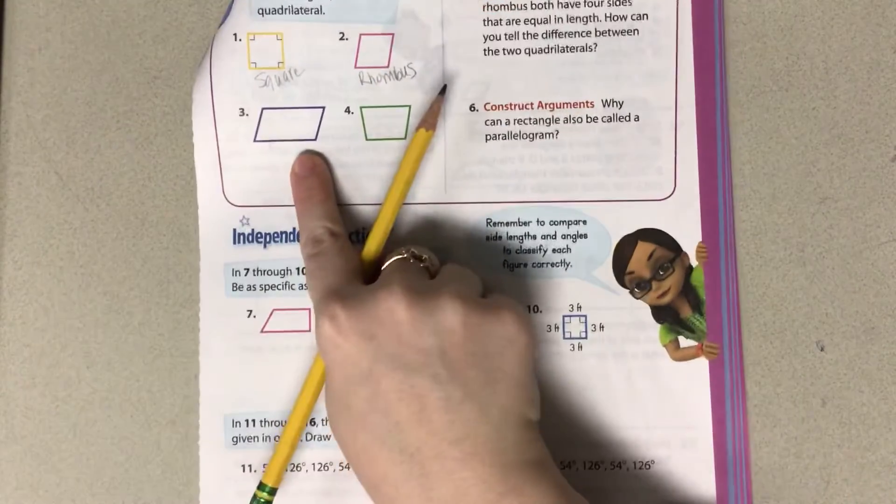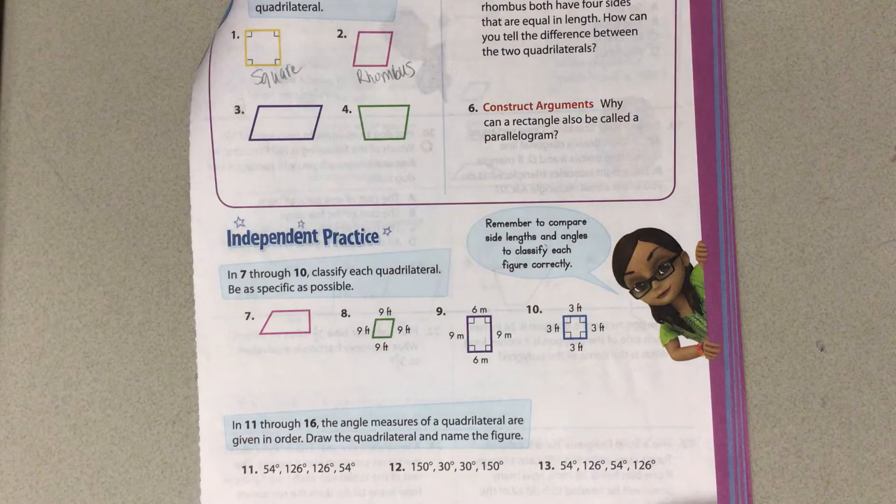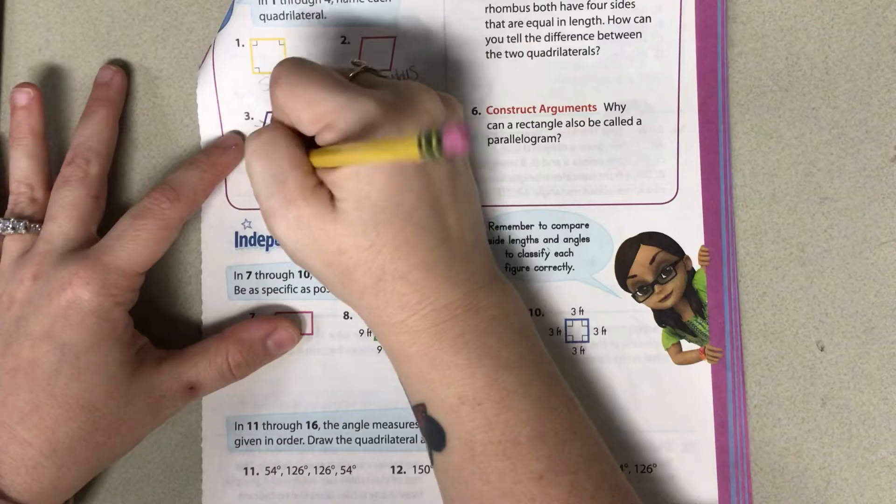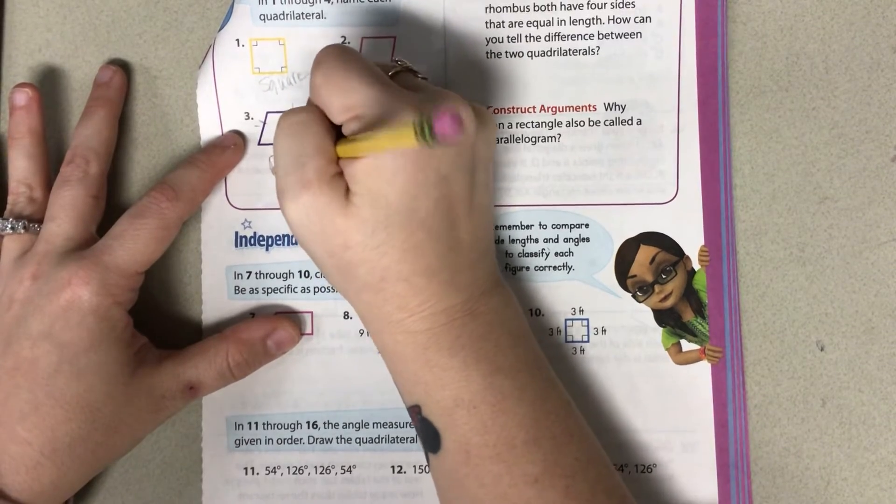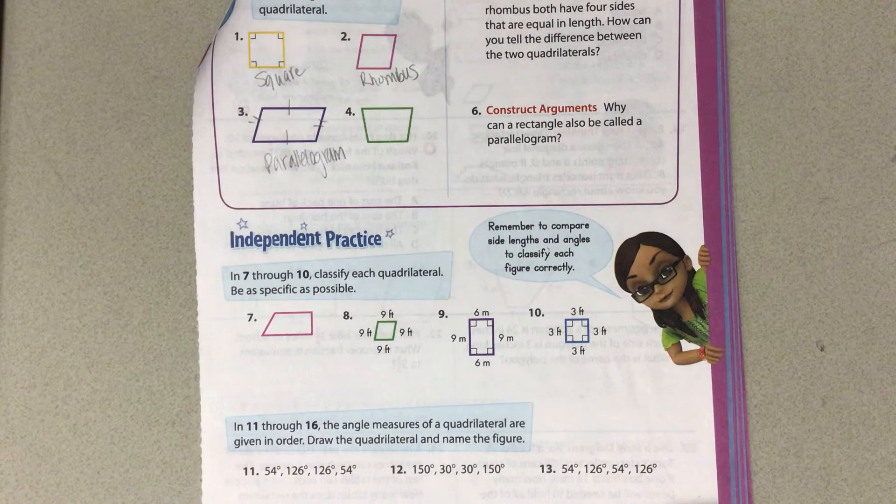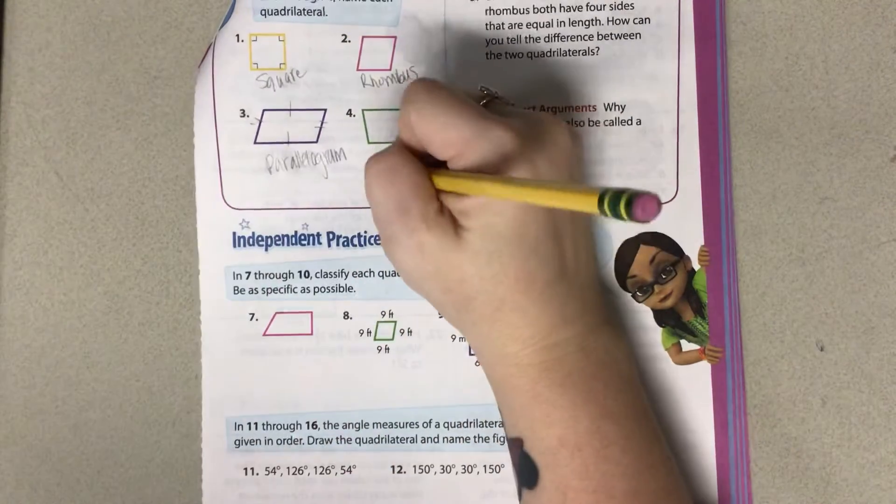All right, so let's look at number three. What do we think that is? That's going to be our parallelogram. And then what do we think number four is? That's going to be our trapezoid.